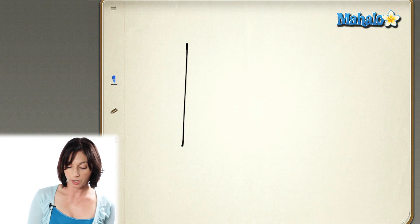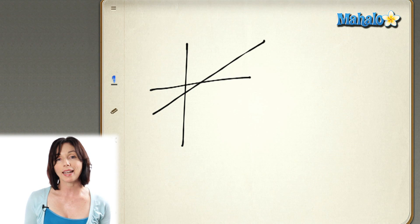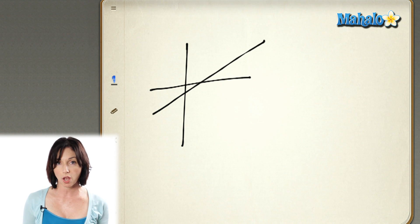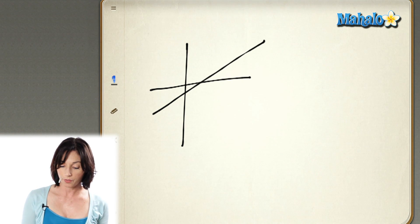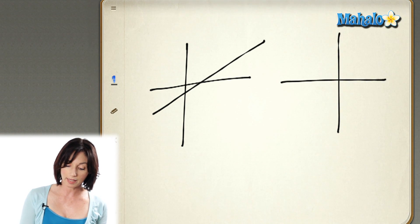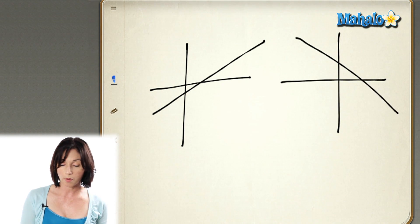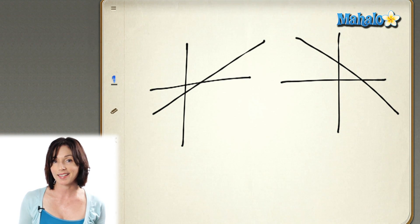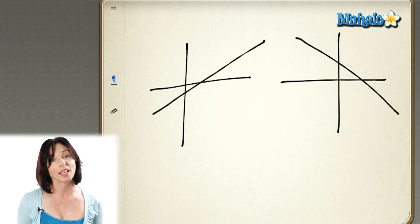You can actually tell if a slope is positive or negative just by looking at a graph of the line. If you have a line that slopes up from left to right, that has a positive slope. And if you see a line that goes down from left to right, that line has a negative slope. And that's slope.